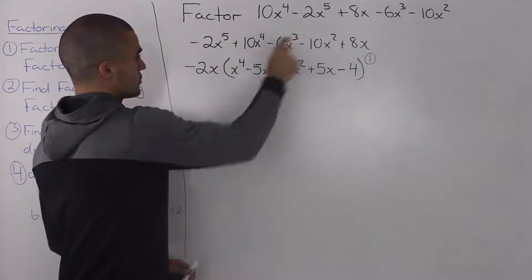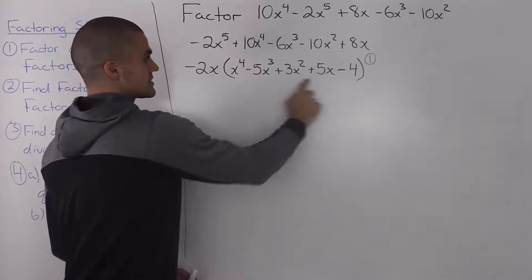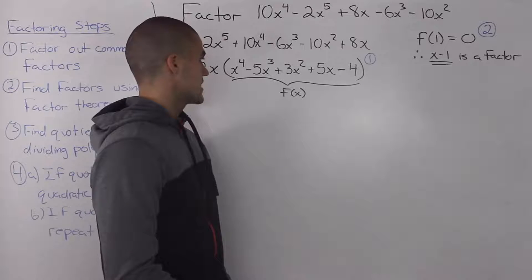And notice how we can also take out a 2 from all of these terms and an x variable. So then taking all these terms and dividing them by negative 2x, we end up getting this polynomial in the brackets. So now we can move on to step 2.